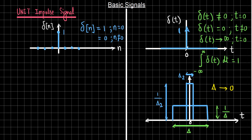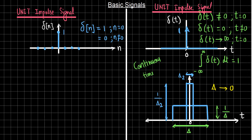This is the unit impulse signal for the continuous time case, while the previous one we saw on the left is for the discrete time case. We can see that the discrete time impulse is very well defined and does not have the kind of complexity that exists in the continuous time case. Let's now look at another basic signal.